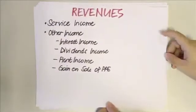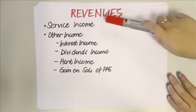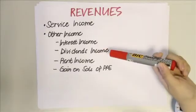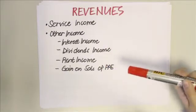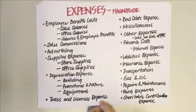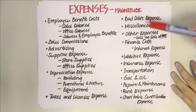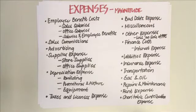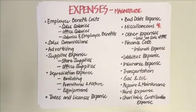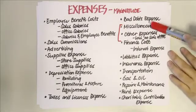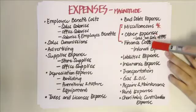Under revenues, since you're in the service industry, you have service income, plus other income which may include interest income, dividends income, rent income, and gain on sale of PPE. For expenses, using the natural form, they are arranged according to magnitude — largest first, smallest last — but miscellaneous expenses, other expenses, and finance costs are always presented at the bottom in that order, regardless of amount.